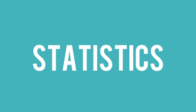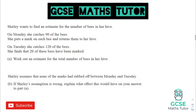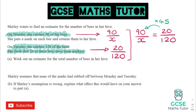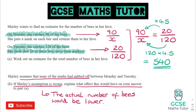On to statistics: for capture-recapture, read the question carefully and write each capture as a fraction. Here 90 bees were caught out of an unknown total on the first capture; on the second she catches 120 and 20 are marked. Set the two fractions equal to each other and find how to make them equivalent — here multiply the numerator by 4.5 and do the same to the denominator to get the total. Read any part b questions carefully and make sure your answer makes sense.